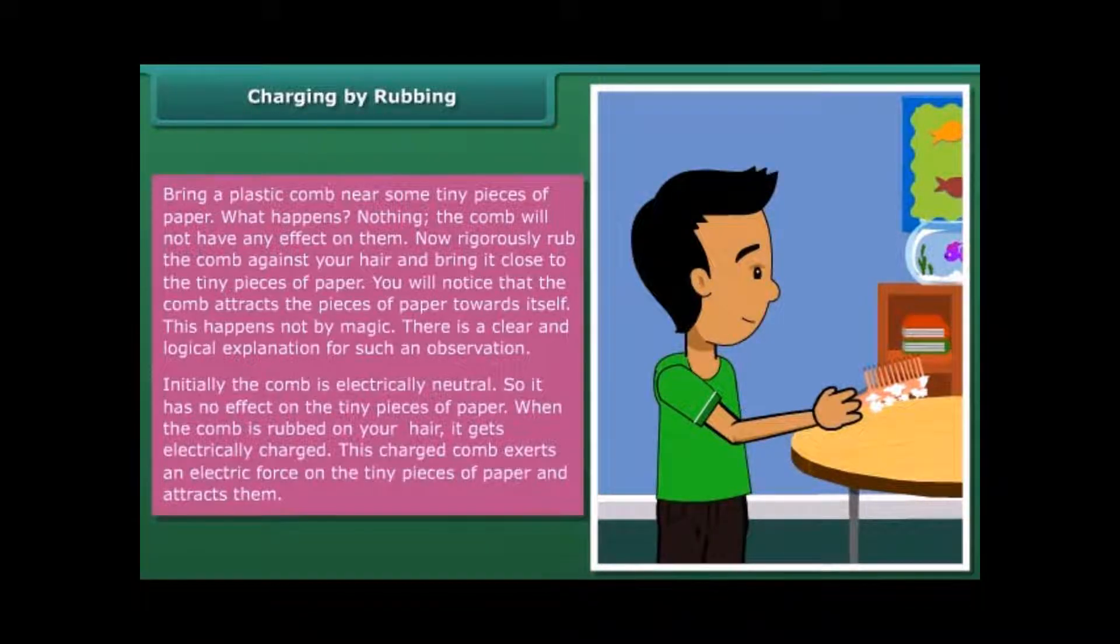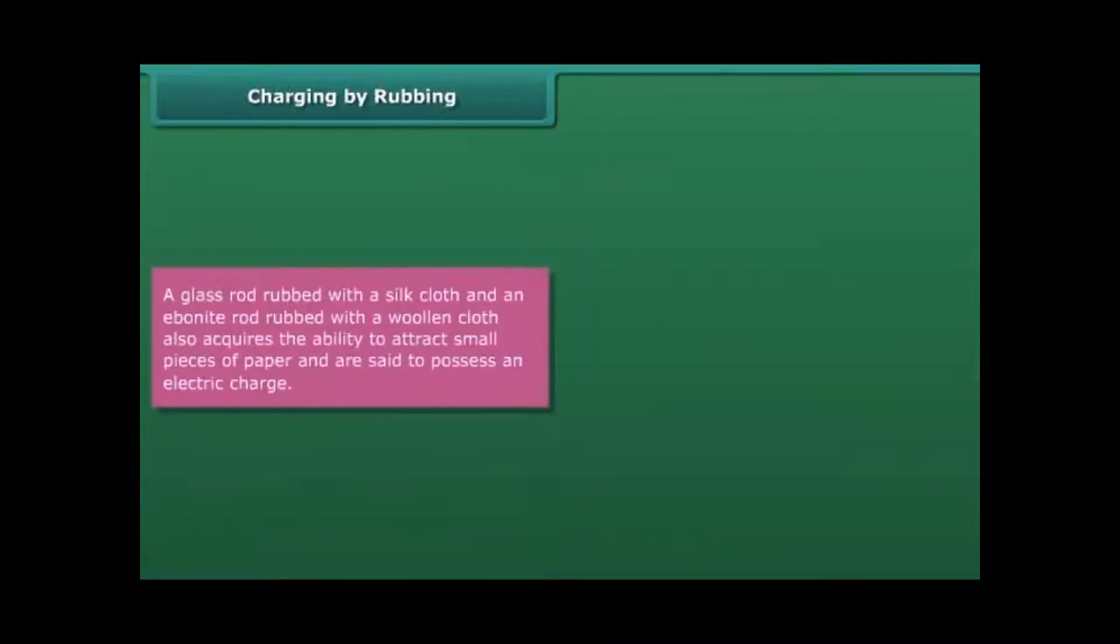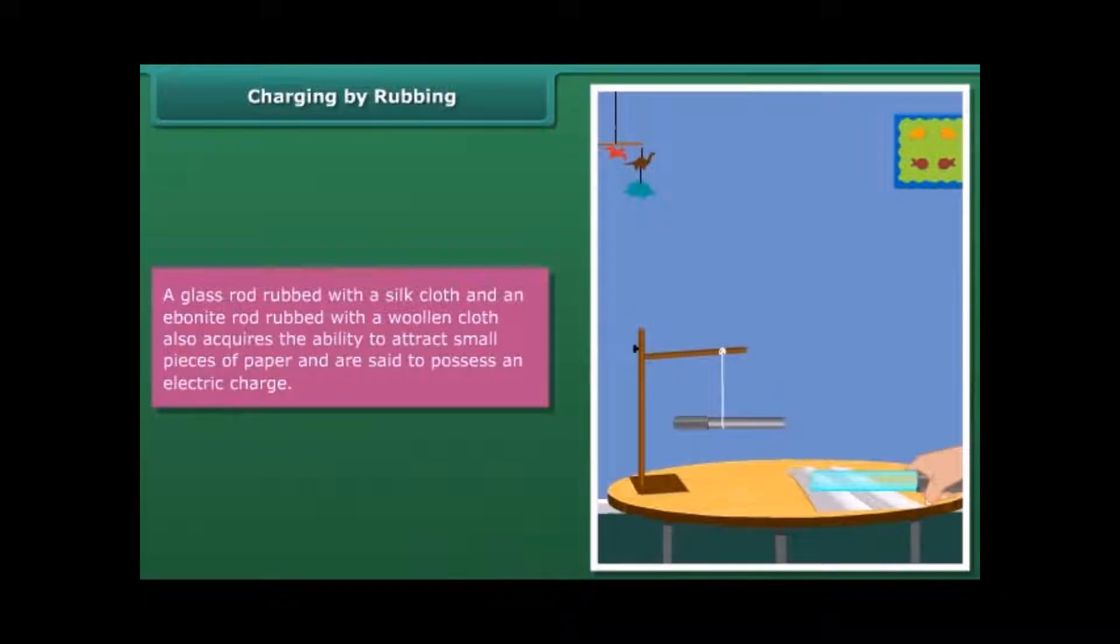This happens not by magic. There is a clear and logical explanation for such an observation. Initially the comb is electrically neutral so it has no effect on the tiny pieces of paper. When the comb is rubbed on your hair it gets electrically charged. This charged comb exerts an electric force on the tiny pieces of paper and attracts them. A glass rod rubbed with a silk cloth and an ebonite rod rubbed with a wooden cloth also acquires the ability to attract small pieces of paper and are said to possess an electric charge.